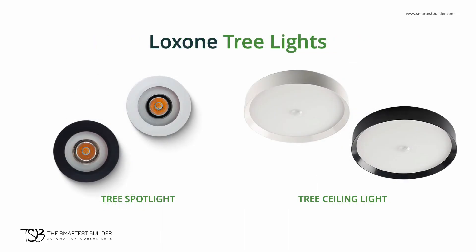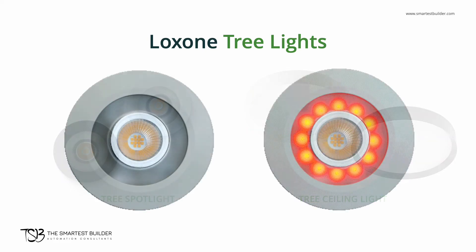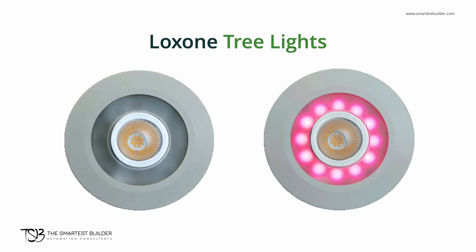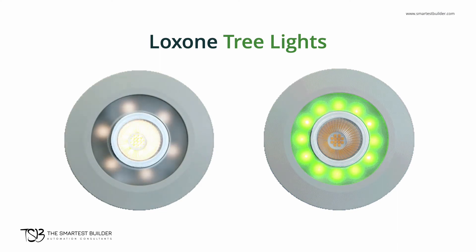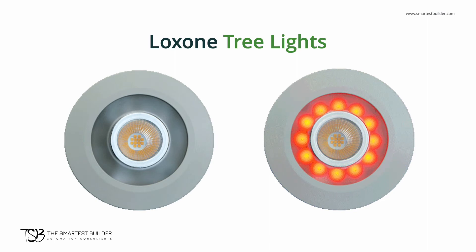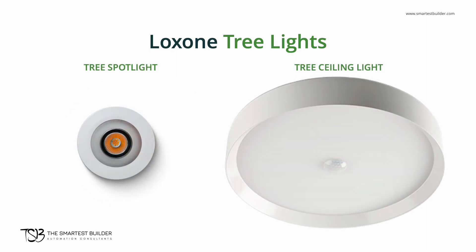Finally, we have Luxon tree lights. Luxon has multiple versions of tree lights, but the two most common are the spotlight and the ceiling light. Both lights provide tunable warm white light as well as full-spectrum colored light. In addition, both of these lights can smoothly dim themselves, so there's no need for an extra driver or extra dimming modules, making it a very compact and cost-effective option for home automation lights.